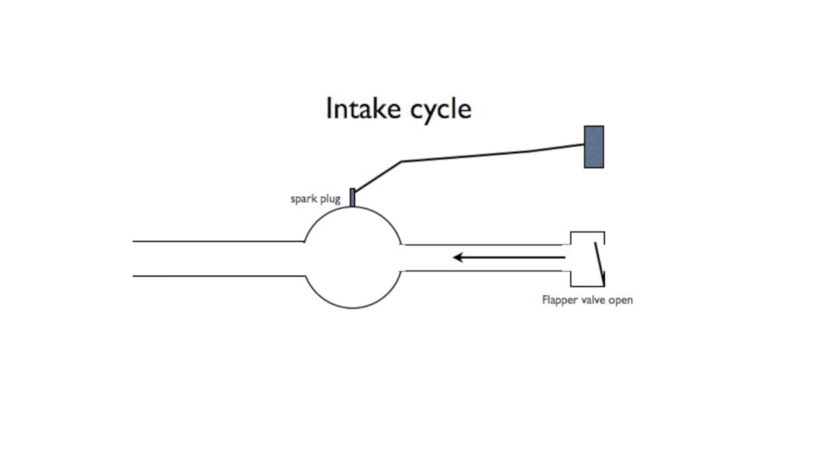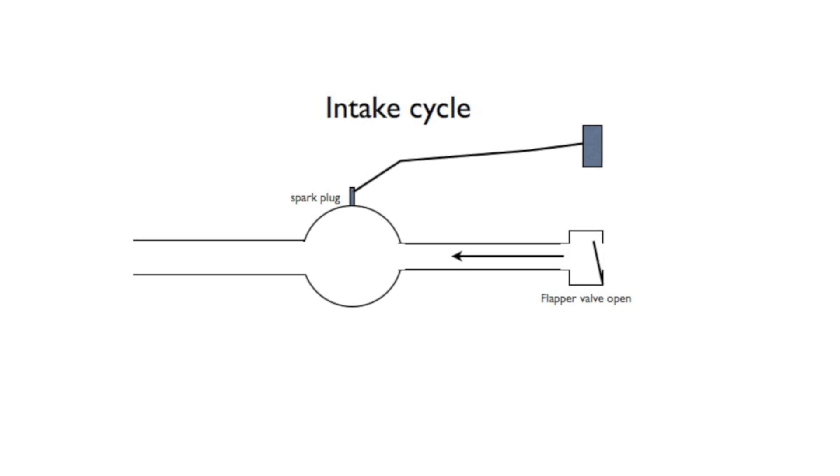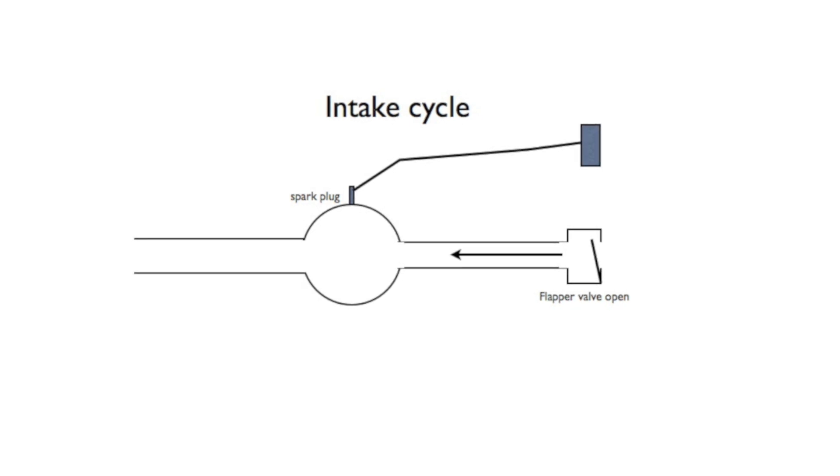Okay, there's a combustion chamber in these things. That's the round part in the middle. There's an intake pipe on the right, and there's a flapper valve. Now, the flapper valve on these things doesn't look just like this, but this is just for illustration.